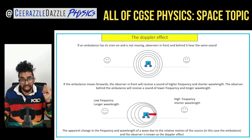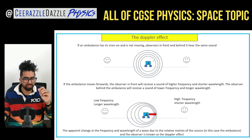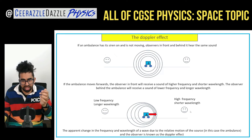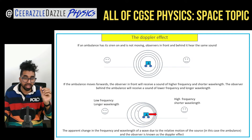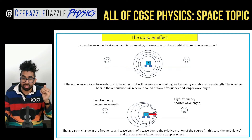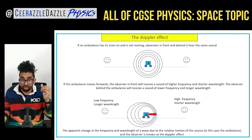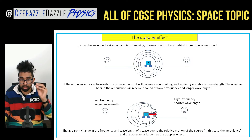The Doppler effect. Let's say we have an ambulance with a person behind it and a person in front. Initially if the siren is on, you would hear the same thing from both sides because the waves are coming out equally. But when the ambulance starts to move to one side, the waves get bunched up — the person in front will observe a higher frequency and a shorter wavelength. The person behind watching it leave will experience a lower frequency because the wavelength has been stretched out. This is known as the Doppler effect — the apparent change in the frequency and wavelength of a wave due to the relative motion of the source and the observer.